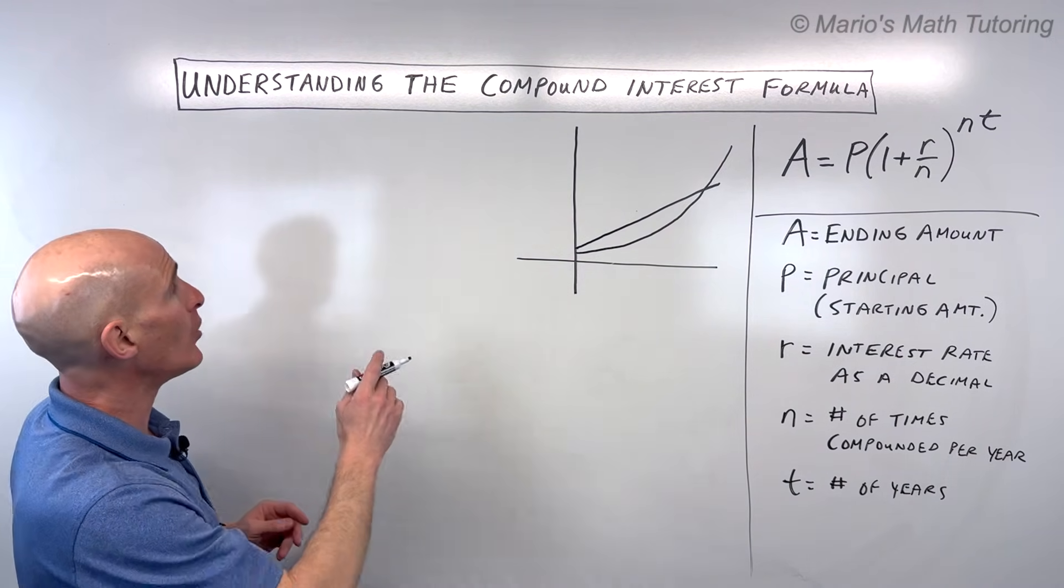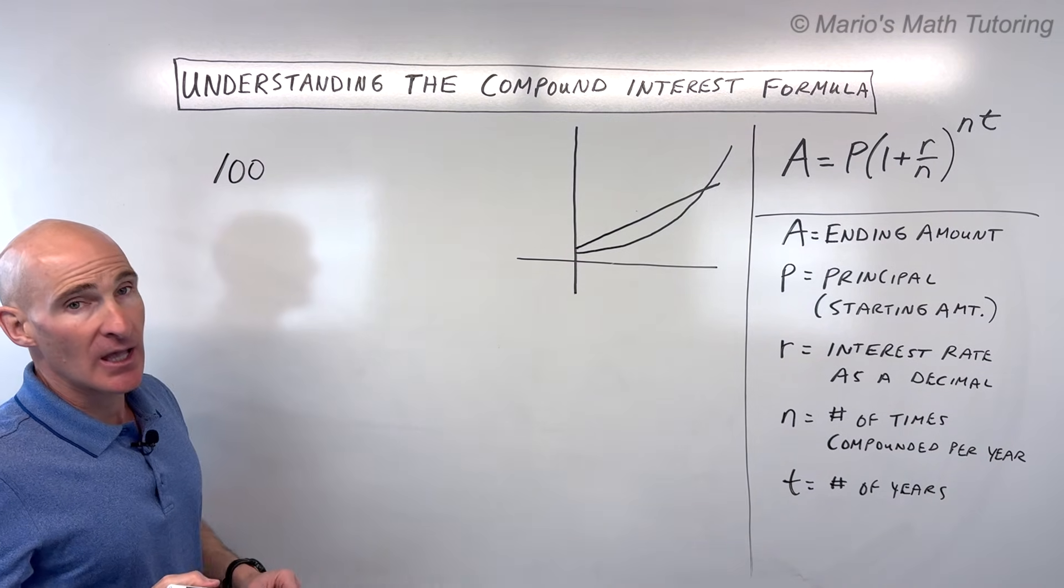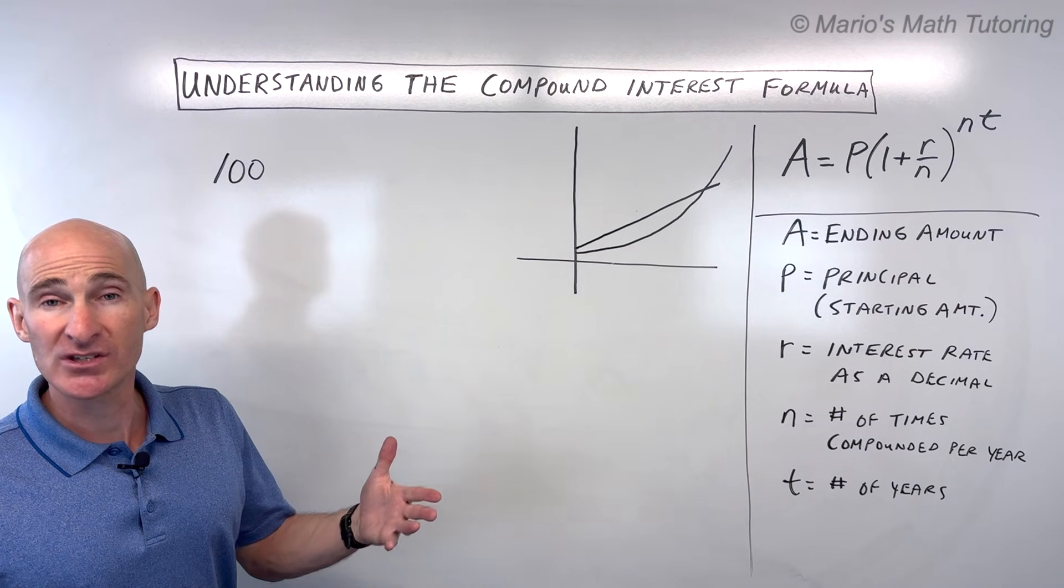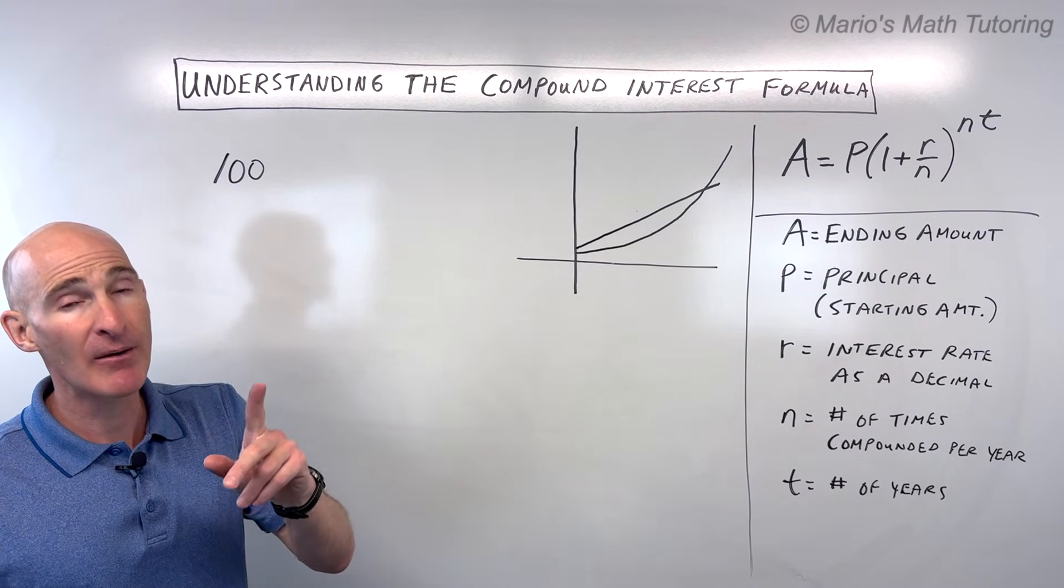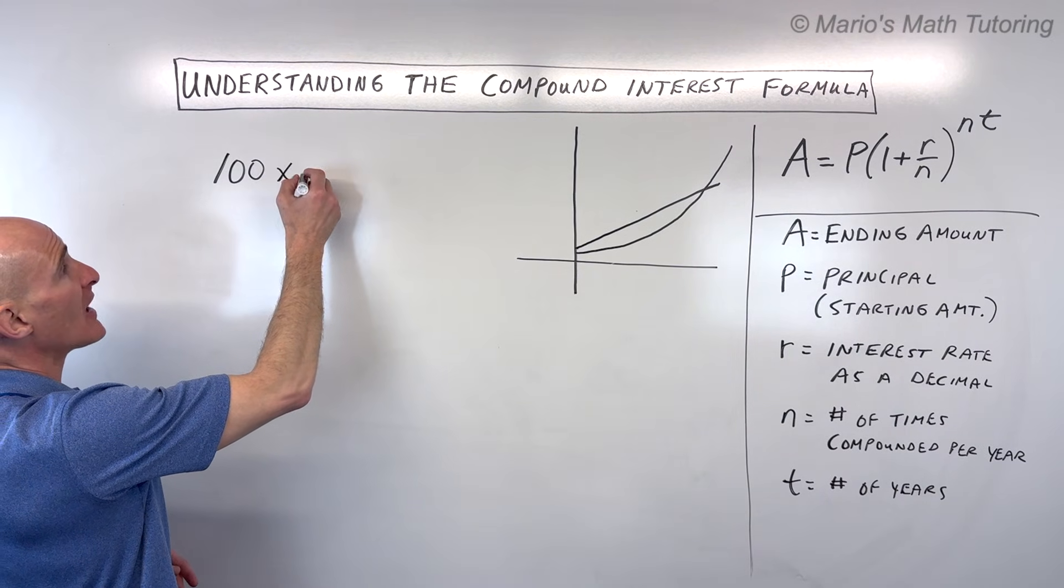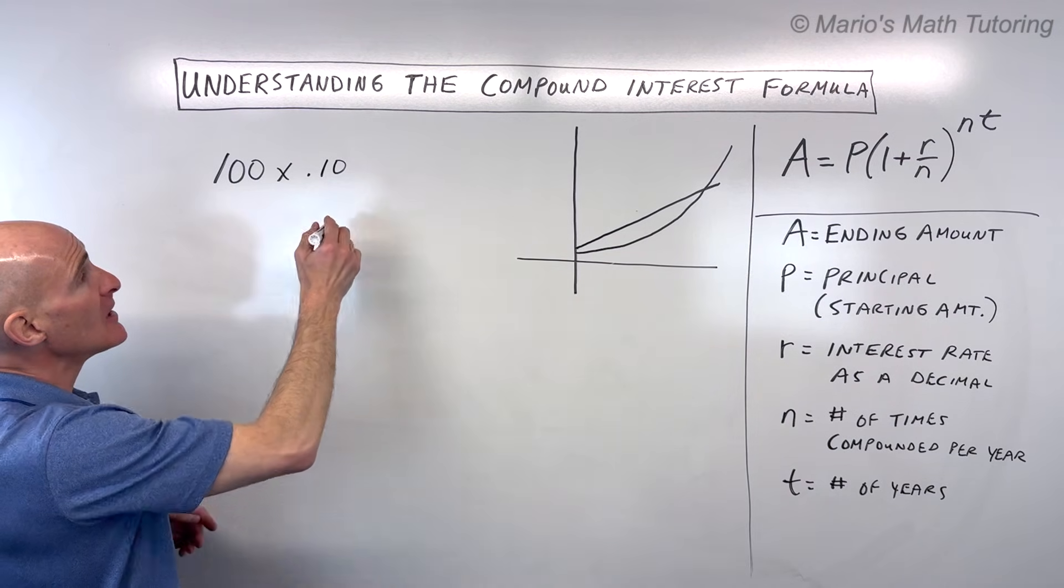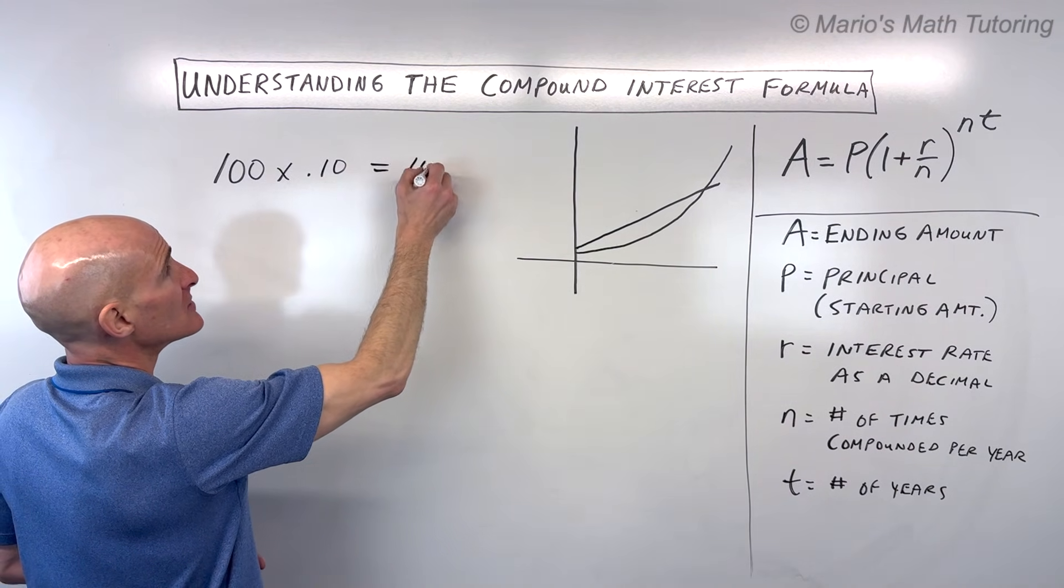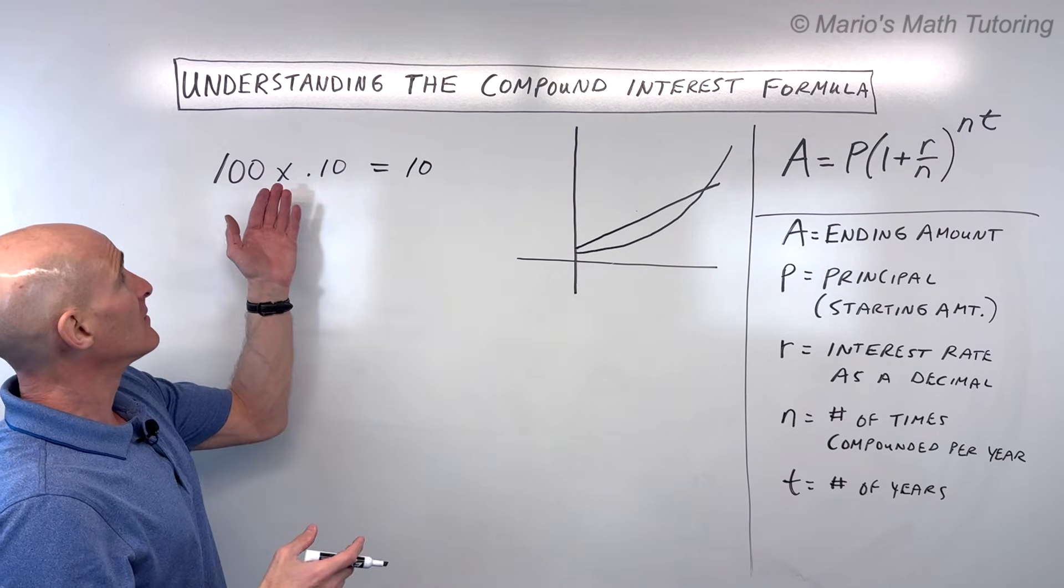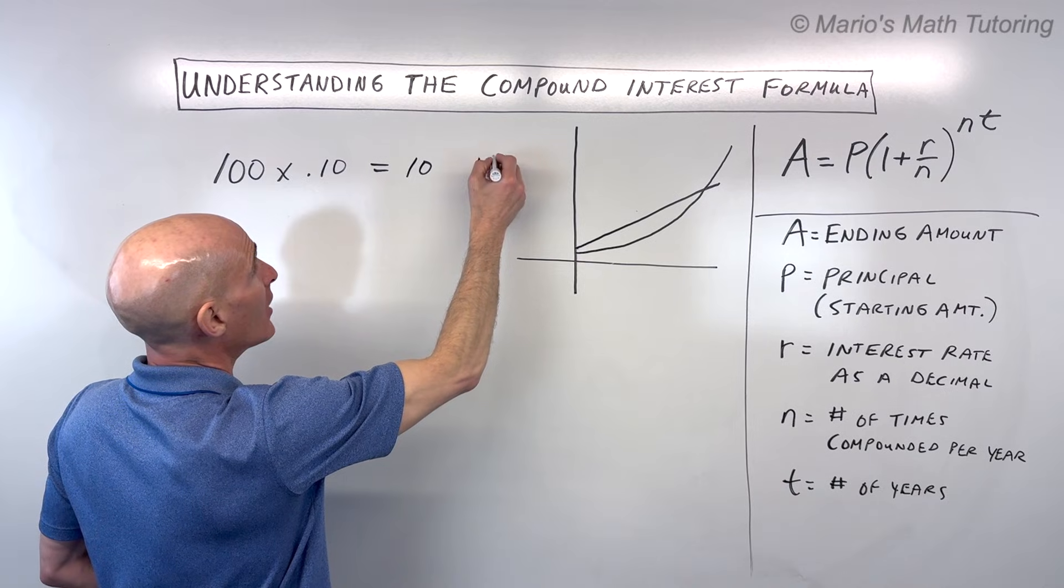I want to just show you a concrete example. Just say, for example, you started with $100 and let's say that you're able to get 10% interest per year, and it's only compounded once per year. What you would do is say, $100 times 10%. 10% you have to convert to a decimal by moving it two places to the left. That would give you $10. So what that means is you started with $100, you got $10 interest, now you're at $110.